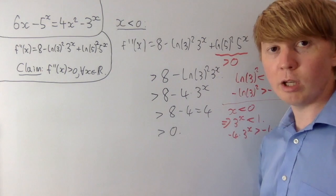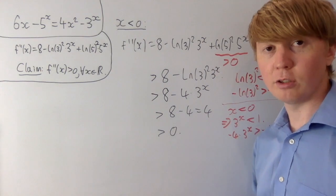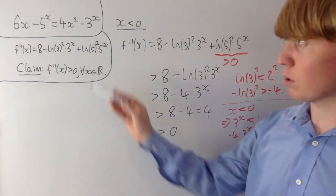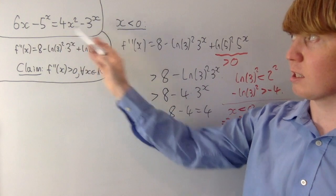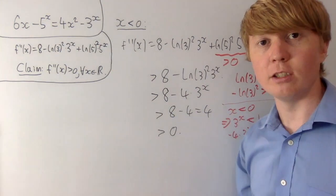So we've shown the second derivative is greater than zero in both cases — it's true for all x. This tells us we have only two roots of f, and hence there are only two solutions, x equals zero and x equals one, to our original equation.